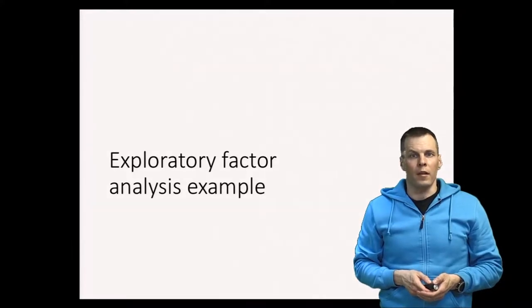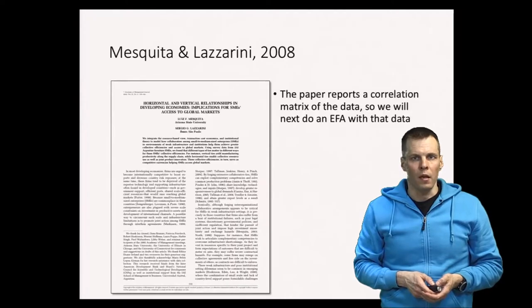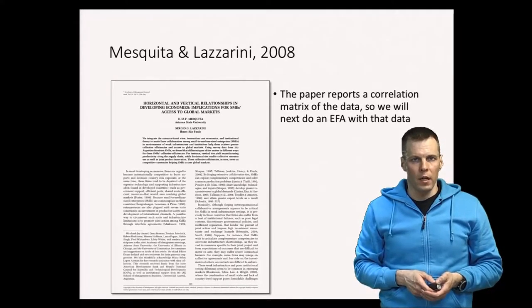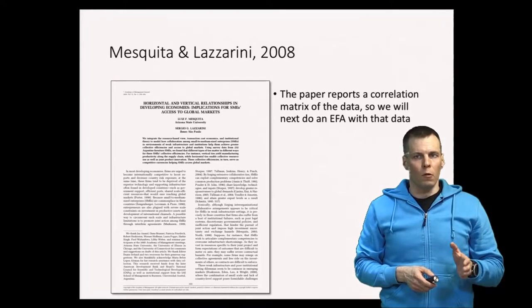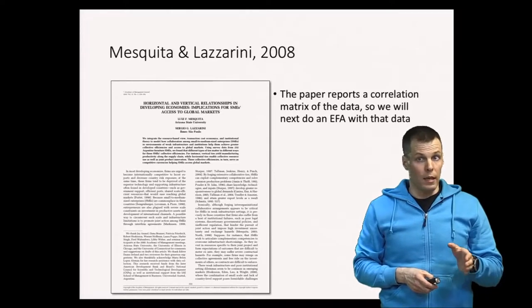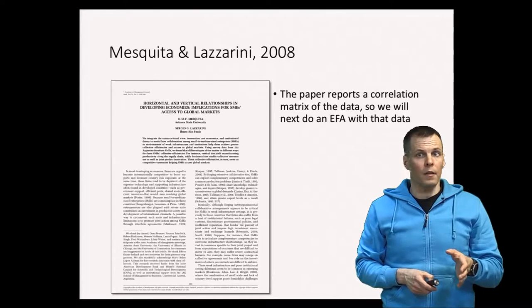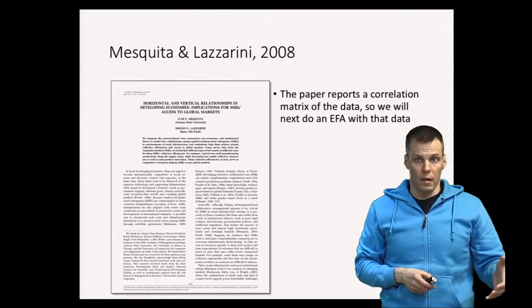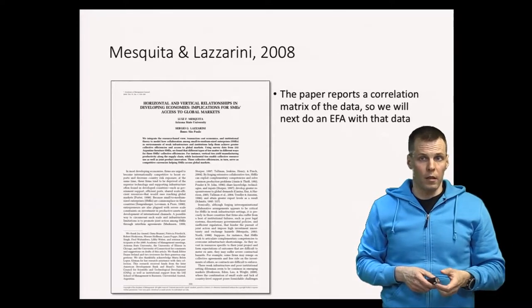Let's take a look at an empirical example of exploratory factor analysis. To do that we need some data, and our data comes from a research paper by Mesquita and Lazzarini from 2008. This is an interesting paper because the authors present the full correlation matrix of all the indicators. That means we can replicate everything the authors do using the correlation matrix, and we also get the same result for all the analysis, so this is a completely transparent paper that we can replicate ourselves.